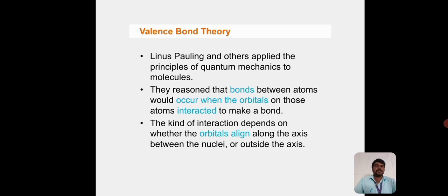In Valence Bond Theory, Linus Pauling and others applied the principles of quantum mechanics to molecules. They reasoned that bonds between atoms would occur when the orbitals on those atoms interacted to make a bond. The kind of interaction depends on whether the orbitals align along the axis between the nuclei or outside of the axis.